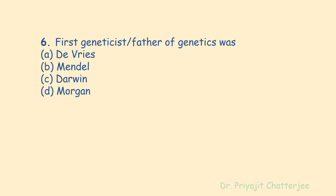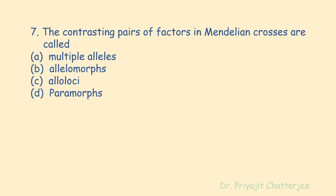The next question: the father of genetics was — options are de Vries, Mendel, Darwin, and Morgan. The correct answer is Mendel. The Austrian monk Gregor Johann Mendel developed his theory about inheritance and formulated the laws of heredity; therefore he is called the father of genetics.